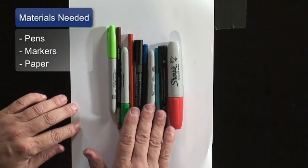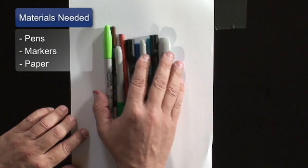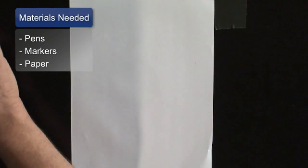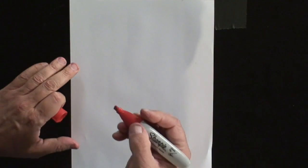For my materials, I'm going to use various colored pens, markers and black pens to make outlines, and a standard sheet of white paper. Let's get started making our comic cover.